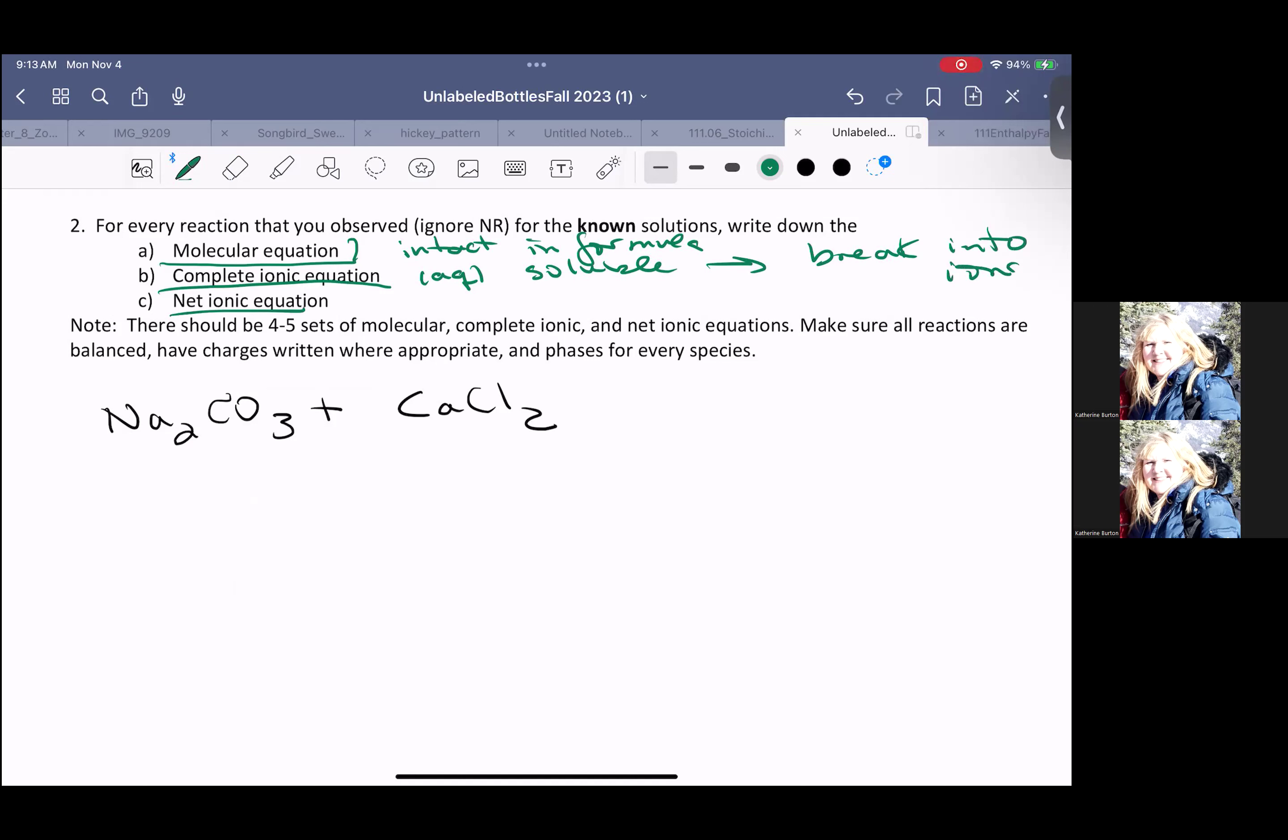And when we look at our net ionic equation, we are going to identify the spectators, and we're going to identify and remove the spectators. And we need to make certain that we have the charges written, that the reaction is balanced, and we have all the phases.